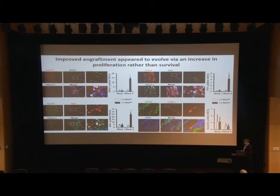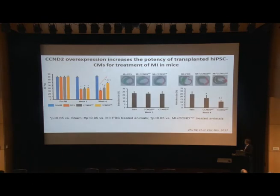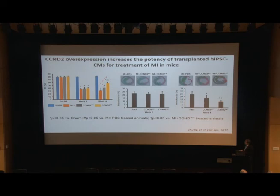We also asked whether, in addition to driving cell cycle activity, Cyclin D2 can protect against apoptosis. Our data suggest this is not the case — wild-type and Cyclin D2 cells displayed similar levels of apoptosis in vivo. We also assessed heart function. At one week, all MI animals showed depressed cardiac function with no significant difference. However, at four weeks after surgery, animals receiving wild-type cell injection showed enhanced cardiac function, and this function was further improved in animals receiving Cyclin D2 cell injection.